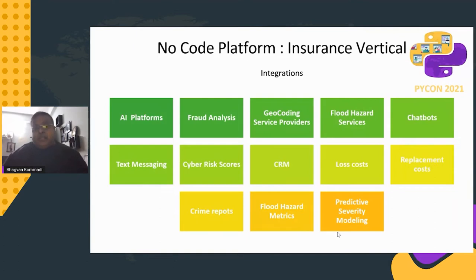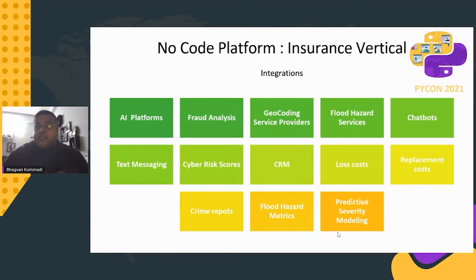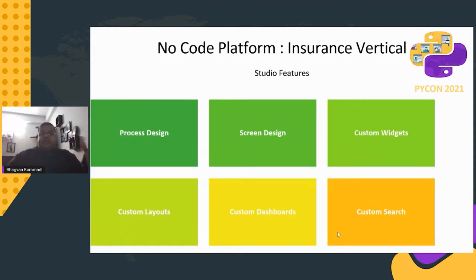For insurance integrations, you need: CRM, AI platforms, fraud analysis, geocoding service providers, threat hazard services for property and casualty, chatbot services, cyber risk scores, loss costs, replacement costs, and crime reports. For home insurance specifically, you need data on crime rates, threat hazard metrics, and predictive modeling.